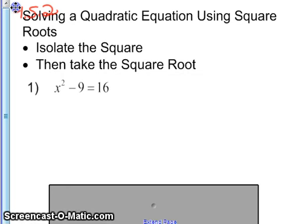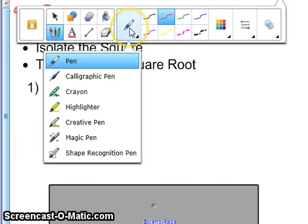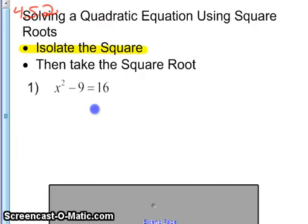Quadratic equations have a variable raised to a power of 2. The first method that we learned on solving quadratic equations was factoring. Now we're learning a second method, and the method is called taking square roots. The first step is isolate the square. And so what you're doing is you are looking for where is the power of 2 in the equation.